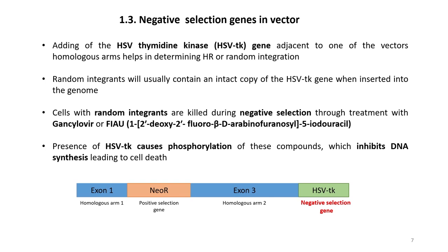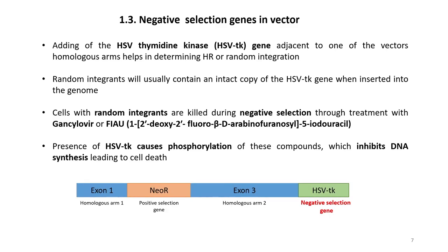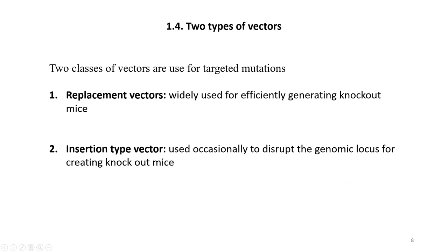Random integrants will usually contain an intact copy of the HSV thymidine kinase gene when inserted into the genome. Cells with random integrants will be killed during negative selection through treatment with Ganciclovir or FIAU. The presence of HSV thymidine kinase causes phosphorylation of these compounds, which inhibits DNA synthesis leading to cell death. The construct thus has a homologous arm, positive selection gene, another homologous arm, and a negative selection gene.